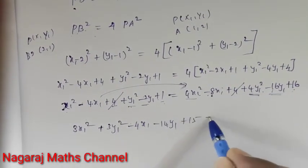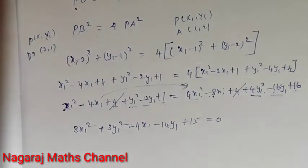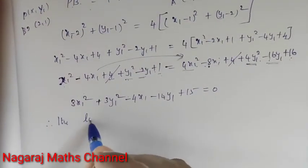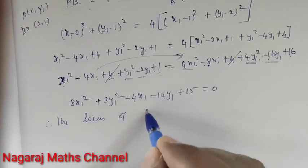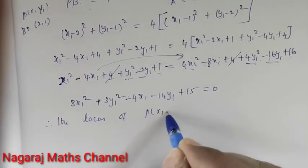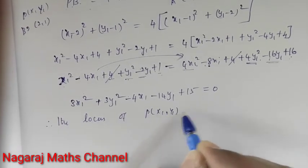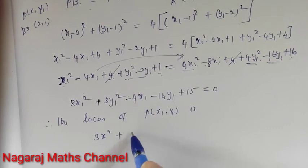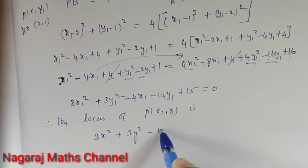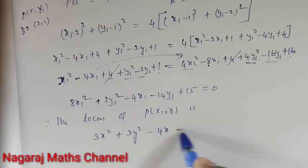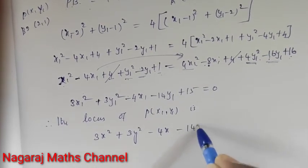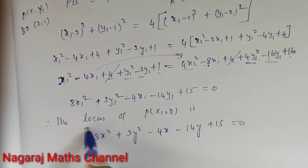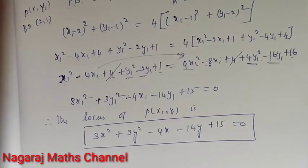This gives plus 15 equal to 0. Therefore, the locus of point P(x1, y1) is: 3x squared plus 3y squared minus 4x minus 14y plus 15 equals 0. This is the answer.